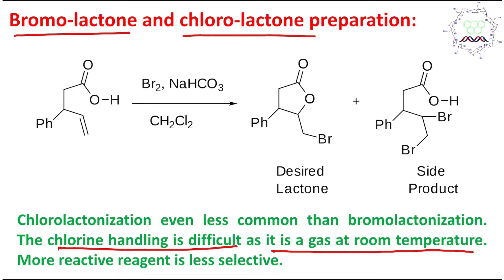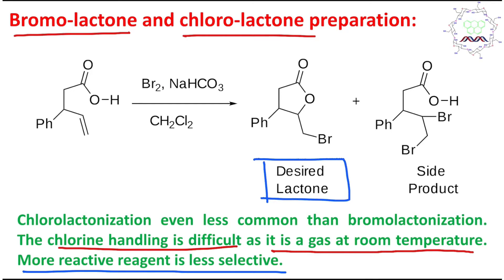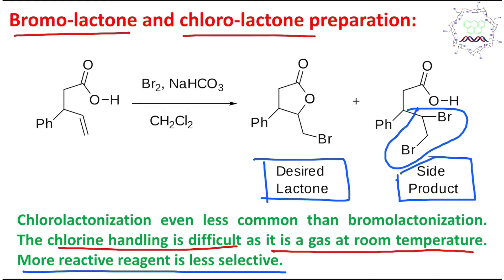Why iodolactonization and not bromolactonization or chlorolactonization? Chlorine is a gas at room temperature, difficult to handle, and more reactive so less selective. Bromine is a liquid reagent and does produce the desired lactone product via the same mechanism, but it also produces a significant side product — simple bromine addition across the C=C double bond. This impurity is a major concern, which is why iodolactone formation is preferred over bromolactone.